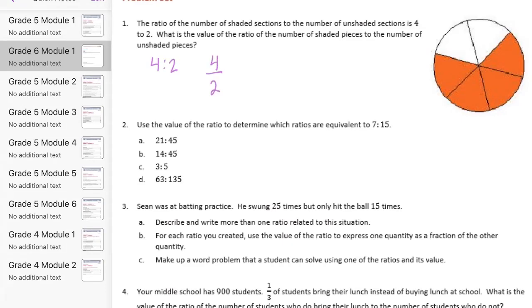Or if I write that as a fraction, 4 to 2. Now I'm going to find the value by reducing it. I can divide both 4 and 2 by 2. I'll end up with 2 over 1. So we can say that the value is 2 over 1, or 2 over 1 is just equal to 2. So the value is 2.